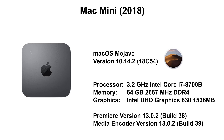First let me show you what I tested on. I got my hands on a brand new Mac Mini 2018. It had a six-core processor in it — 3.2 gigahertz Intel Core i7-8700B — 64 gigabytes of 2667 megahertz DDR4 RAM. It does have integrated graphics: Intel UHD Graphics 630 with one and a half gigabytes of VRAM. Running the latest version of Adobe Premiere Pro and Encoder, as of the recording of this video, and the latest version of Mojave.